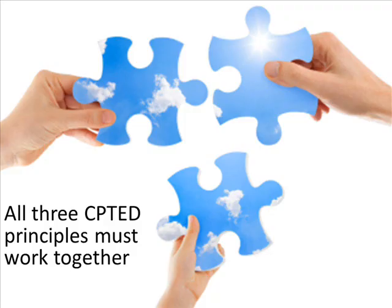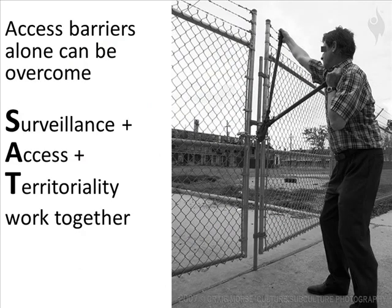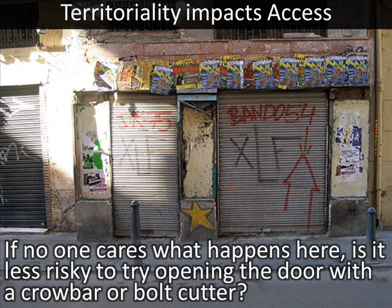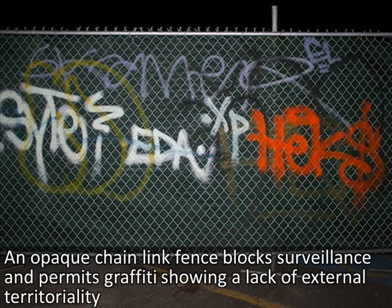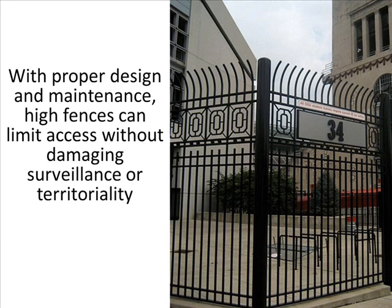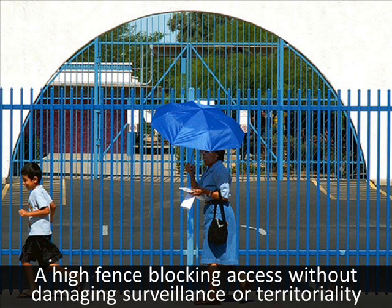All three CPTED principles must work together. Access barriers alone can be overcome, but surveillance plus access plus territoriality work together. Territoriality impacts access — if no one cares what happens here, it's less risky to try opening a door with a crowbar or bolt cutter. Some high fences control access but block surveillance and send a territoriality message that the area is dangerous. An opaque chain-link fence blocks surveillance and permits graffiti. But with proper design and maintenance, high fences can limit access without damaging surveillance or territoriality, as shown in this example.